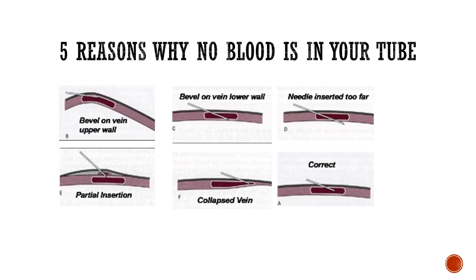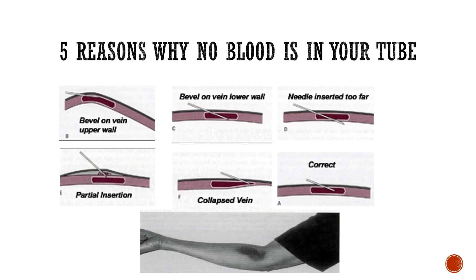Here is how correct placement should look: you're at a 15 to 30 degree angle, bevel up, completely in the vein — not too far, not too short — and the bevel is not on the upper or lower wall. It's perfectly aligned in the vein at the correct angle. This is how your needle should look to get proper blood flow into the tubes. If any of the other issues occur, you can cause bruising or a hematoma. Adjusting the needle can sometimes cause slight bruising, but when the needle is placed correctly, the patient should be fine.